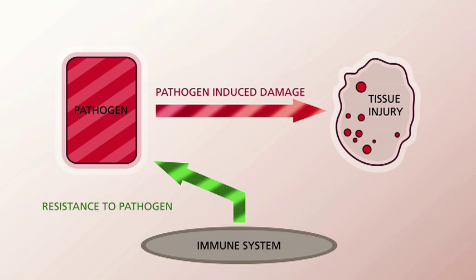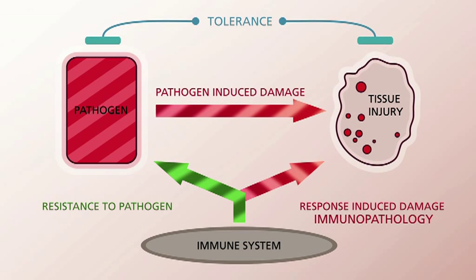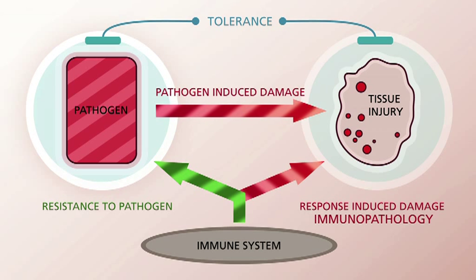The immune response itself is destructive in nature and it often causes collateral damage. Immunopathology is basically all the aspects of disease during an infection that are not caused by a pathogen, but caused by the immune response itself. The strategy of tolerance allows us to tolerate the presence of a pathogen. That strategy is not a function of the immune system — it's a function of the rest of the organism. It allows us to protect our tissues from the damage caused by the pathogen or by the immune response, and allows us to efficiently repair these changes and adapt to the presence of infection.